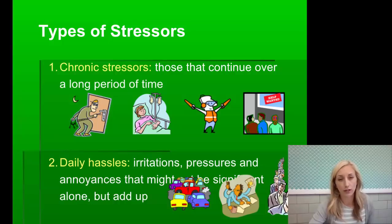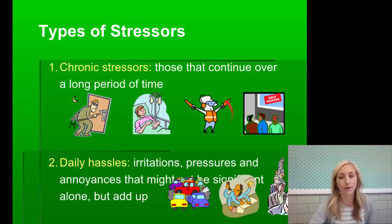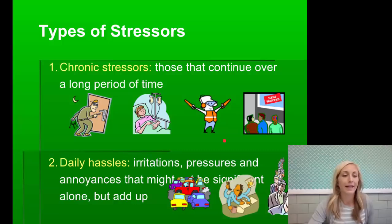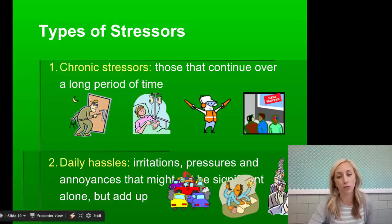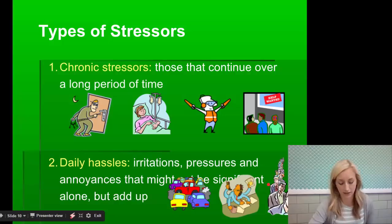Chronic stress continues over a long period of time — things like crime levels in your neighborhood, chronic illness, unemployment, or even ongoing construction around you. Daily hassles are the irritations, pressures, and annoyances that might not be significant alone but add up — your daily commute, traffic, a high workload at work, or long lines to wait in.